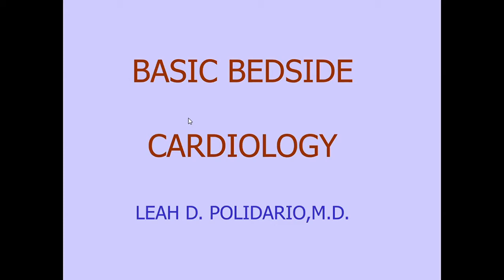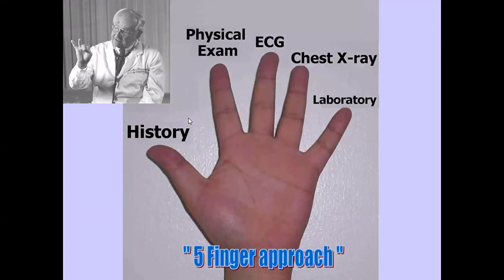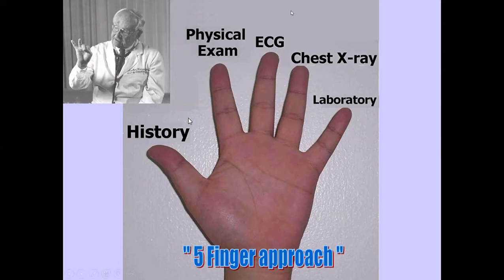To start with your cardiac examination, you begin with your vital signs — you get the blood pressure of the patient. In the cardiac examination, you follow the five-finger approach developed by Dr. Harvey. The first finger represents your history; you need to get the history first before performing the physical examination. The other fingers represent the physical examination, ECG, x-ray, and laboratory examinations.